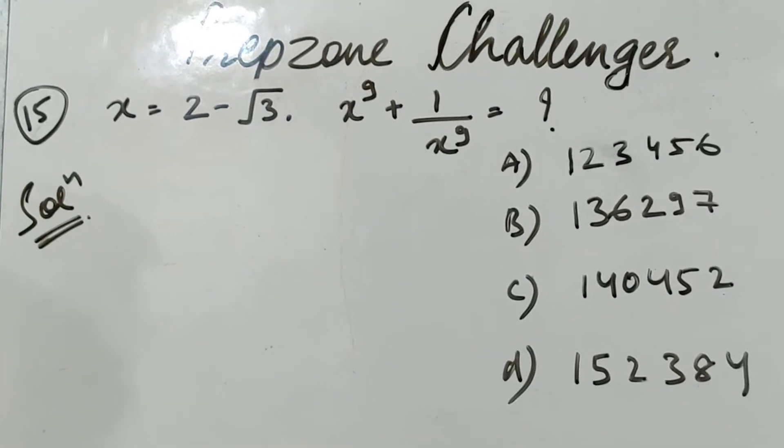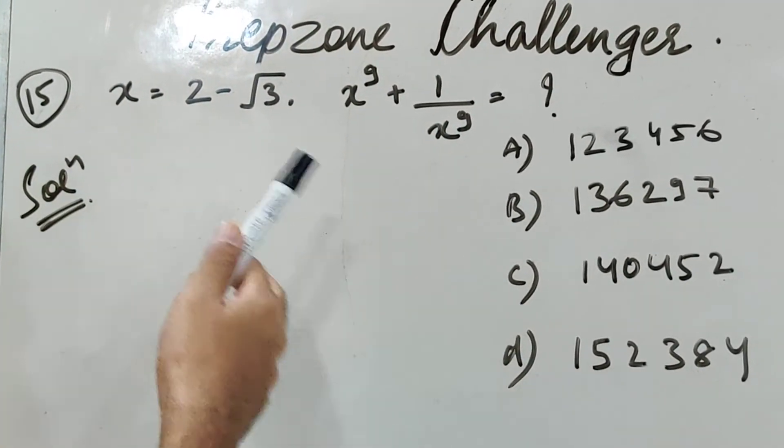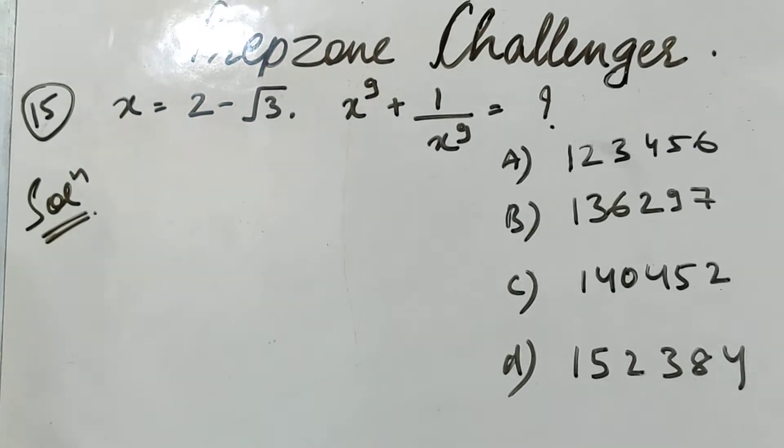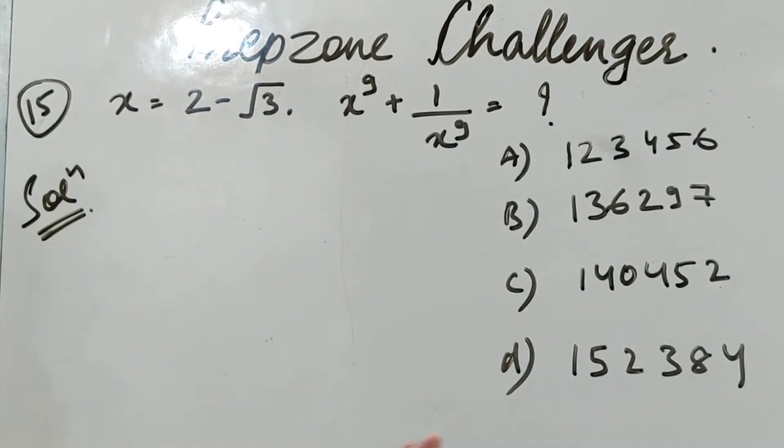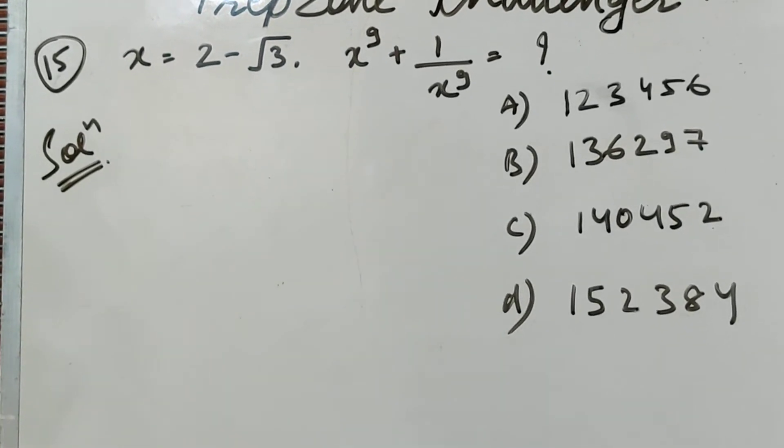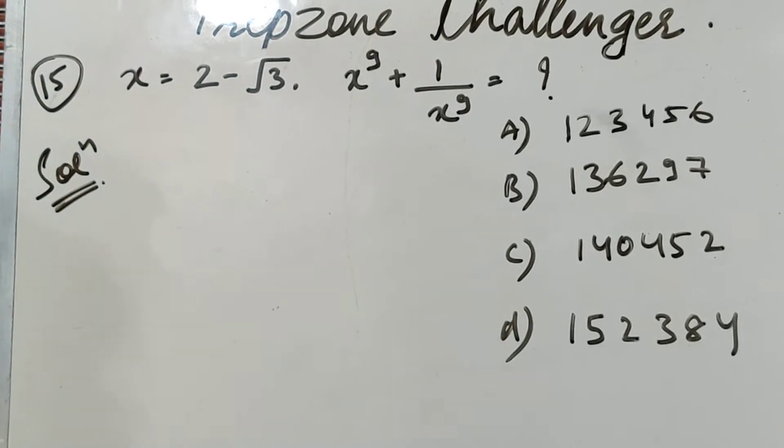First approach which a few of you would be using is calculating x to the power 9 and comparing the options. But that is not doable in 2 or 3 minutes. I bet if anyone can solve using any alternate method within 2-3 minutes, at least let me know. I would really love to know your approach.